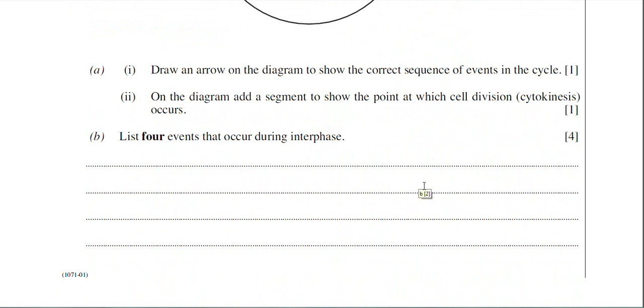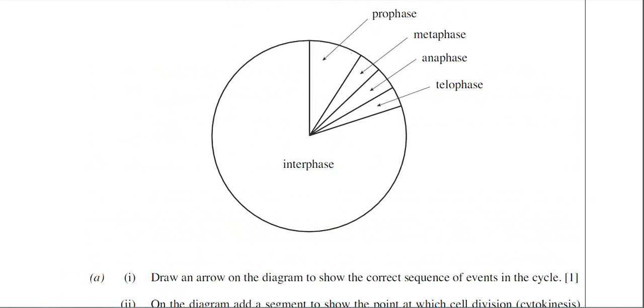Part A1: draw an arrow on the diagram to show the correct sequence of events in the cycle. Basically what the examiner wants is an arrow that shows in which direction the cell cycle is proceeding. So that's the arrow you should have drawn. It's going clockwise because interphase is first, that then leads to prophase, metaphase, anaphase, then telophase. That's worth one mark.